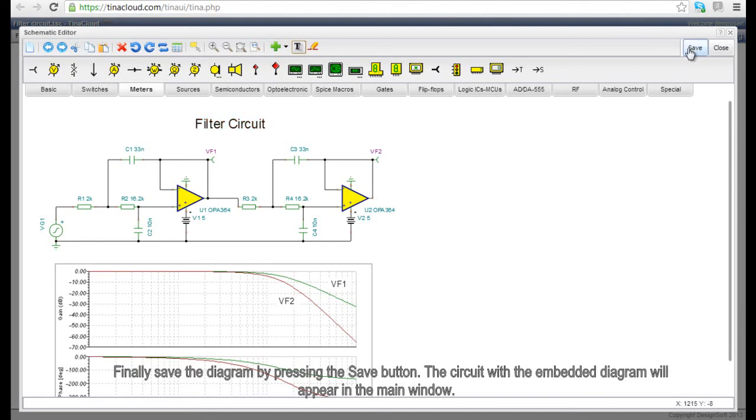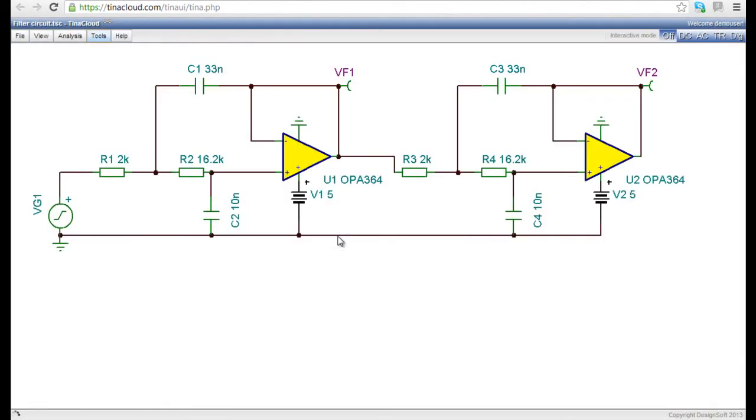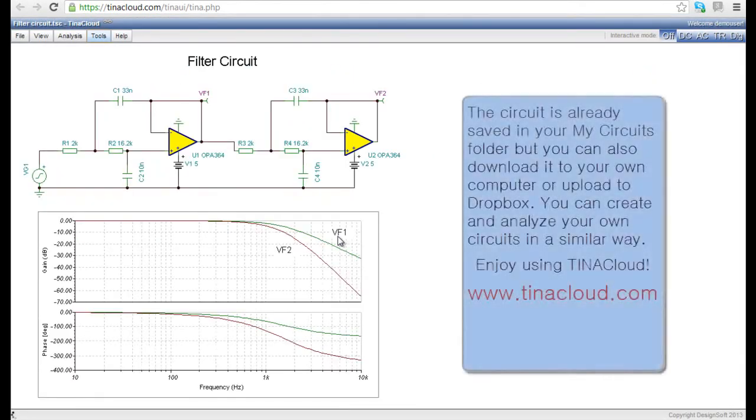Finally, save the diagram by pressing the Save button. The circuit with the embedded diagram will appear in the main window. The circuit is already saved in your My Circuits folder, but you can also download it to your own computer or upload to Dropbox. You can create and analyze your own circuits in a similar way.